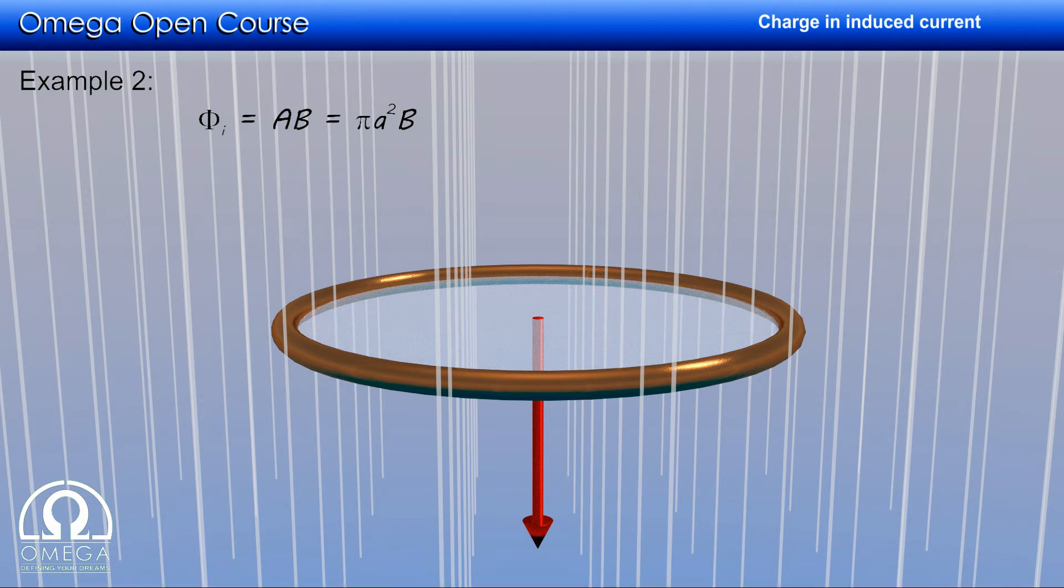Now when the ring is rotated by 180 degrees, its normal too turns by 180 degrees and becomes opposite to the direction of the magnetic field. Hence, the final flux is -πA²B.